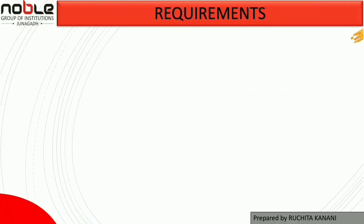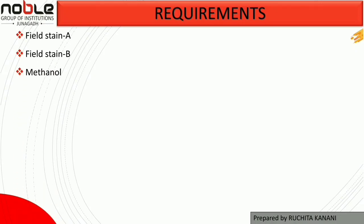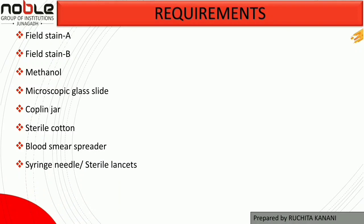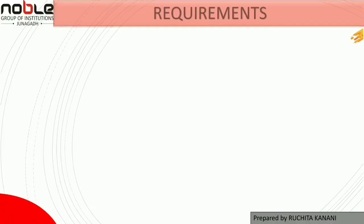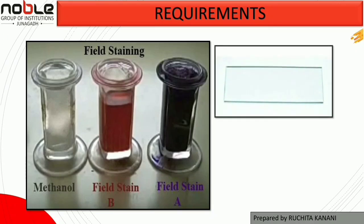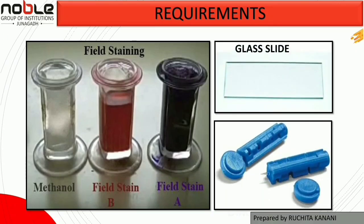The requirements for this practical are: Fieldstain A, Fieldstain B, methanol, microscopic glass slide, capillary tube, sterile cotton, blood smear spreader, syringe needle or sterile lancet, paraffin oil, and microscope. You can see pictures of some requirements: methanol, Fieldstain B, Fieldstain A, glass slide, and lancet.